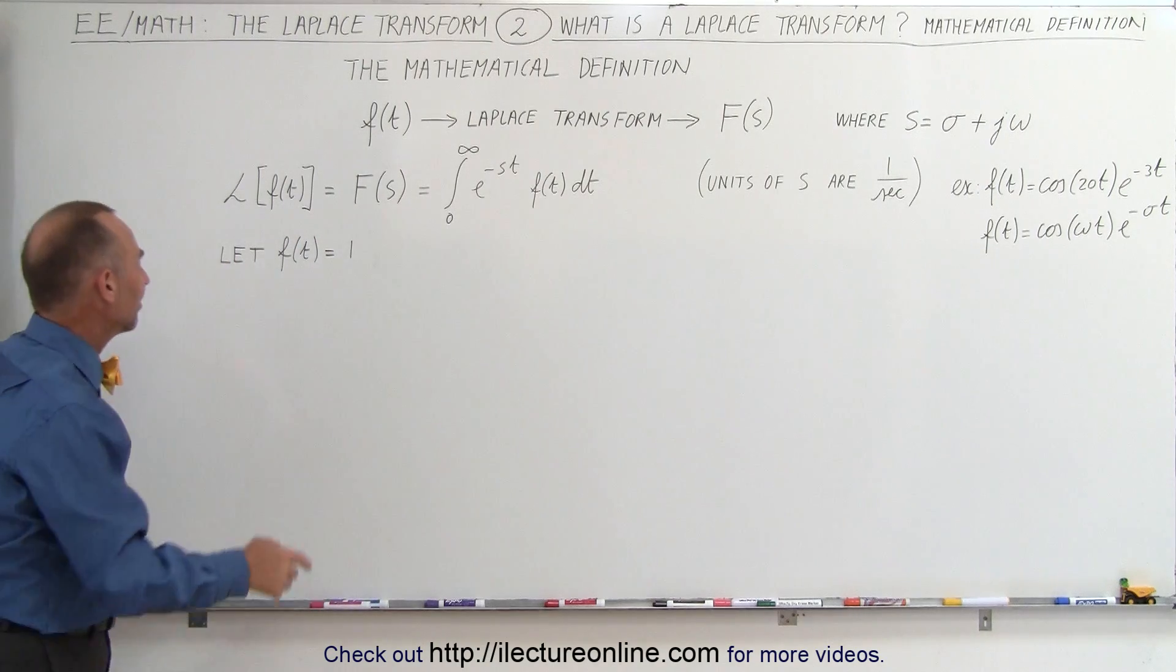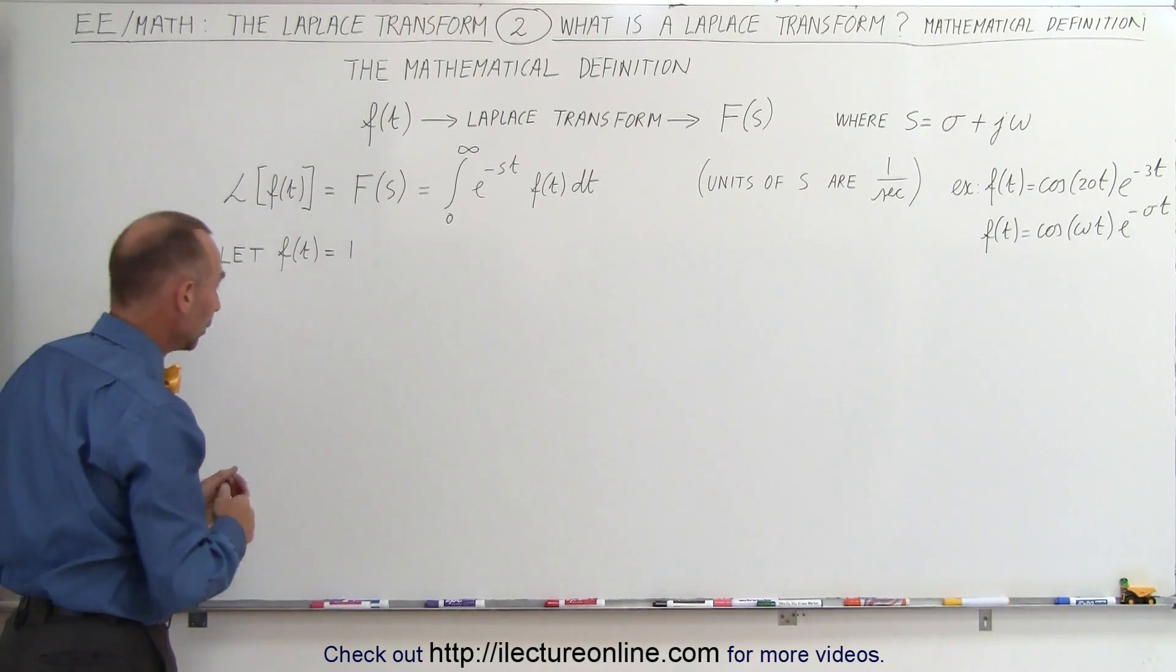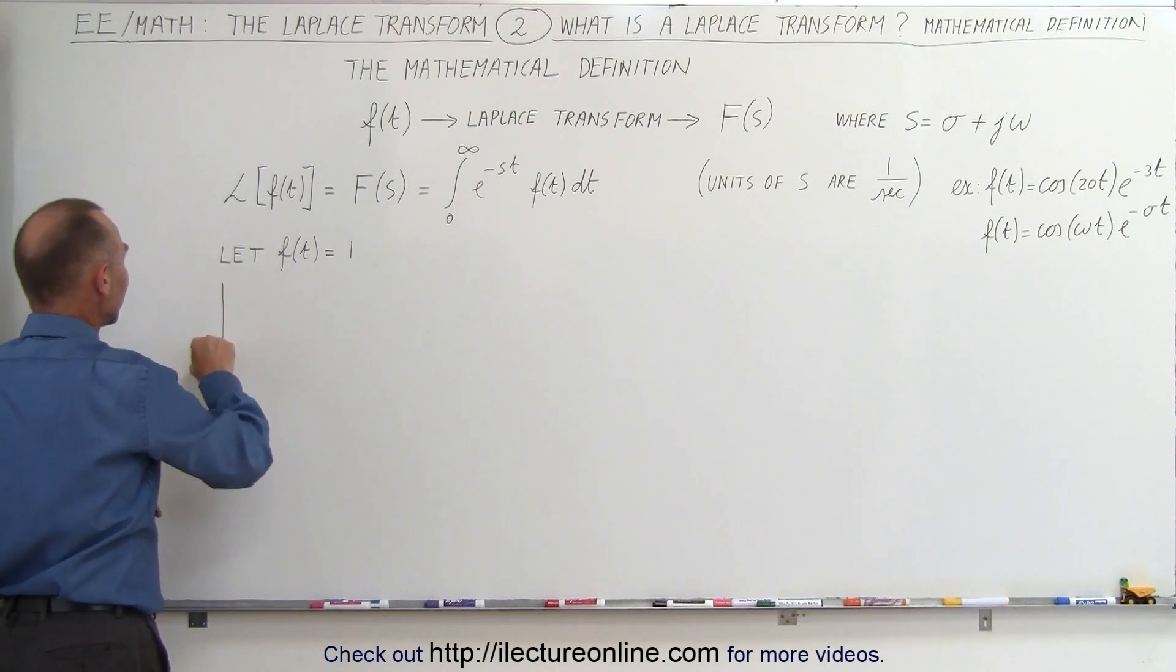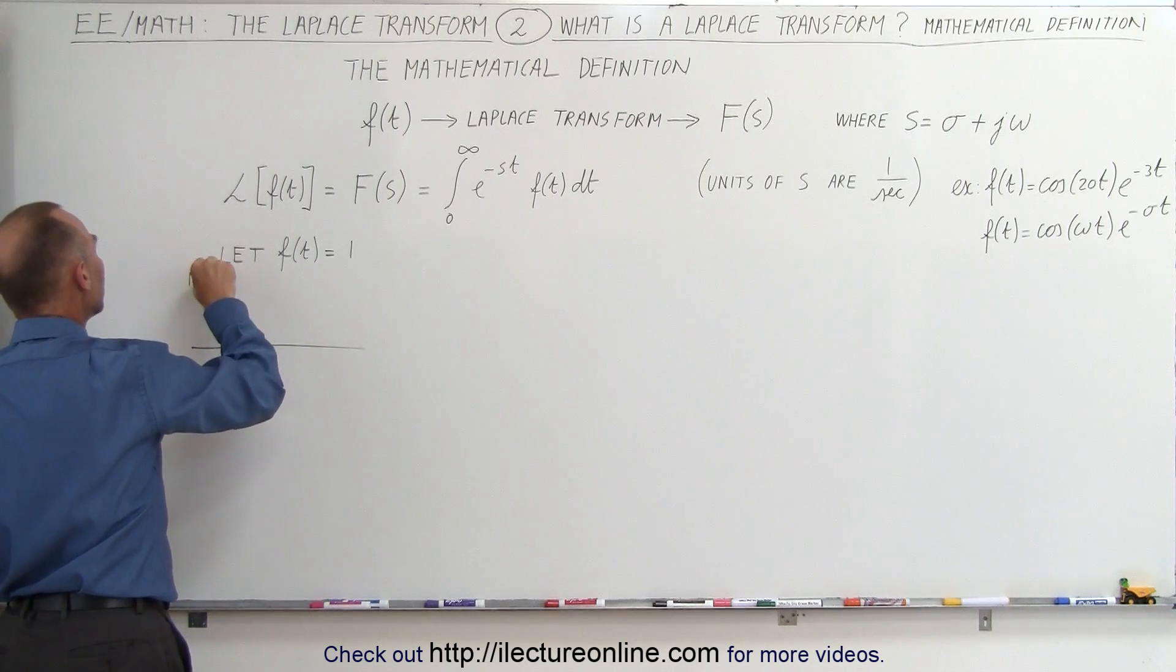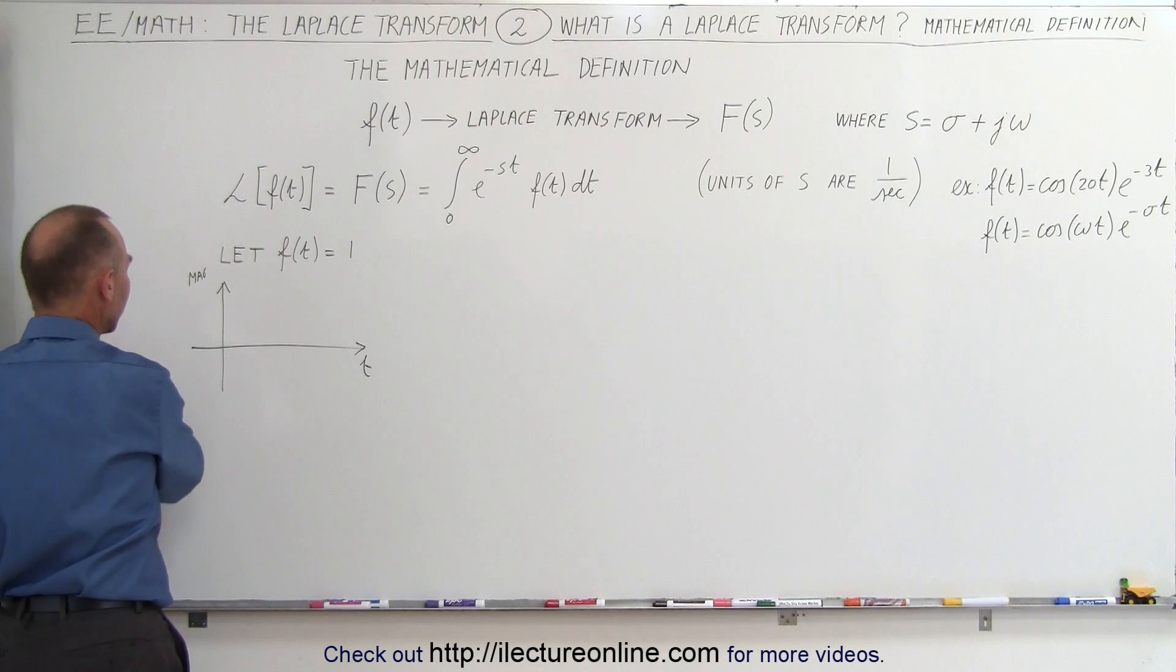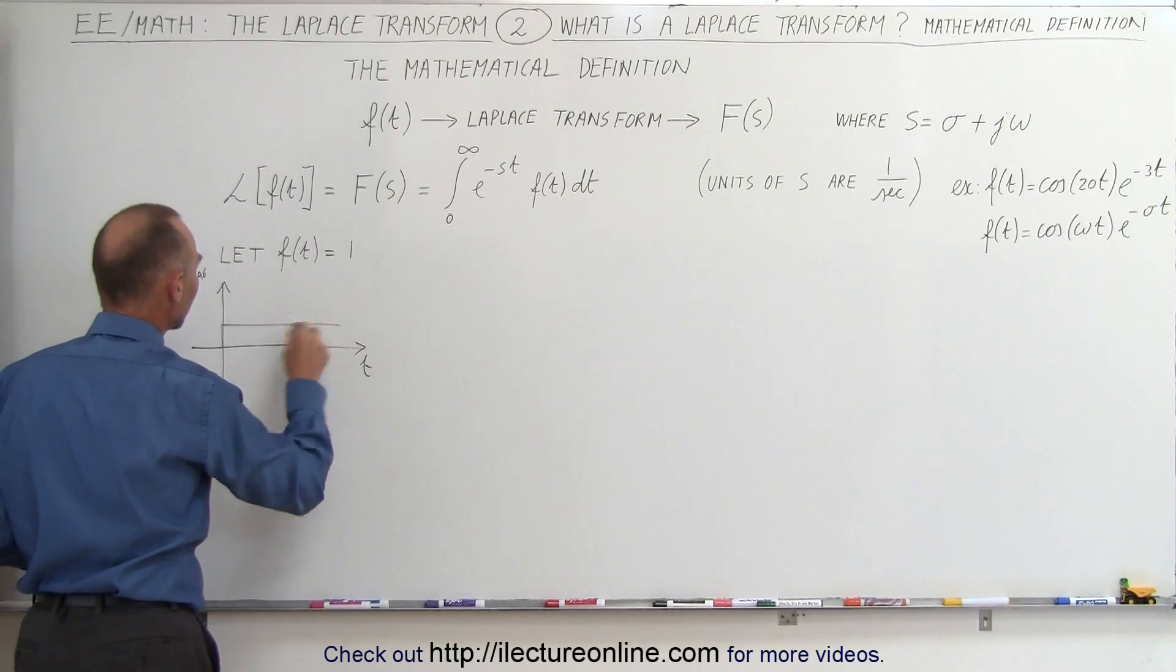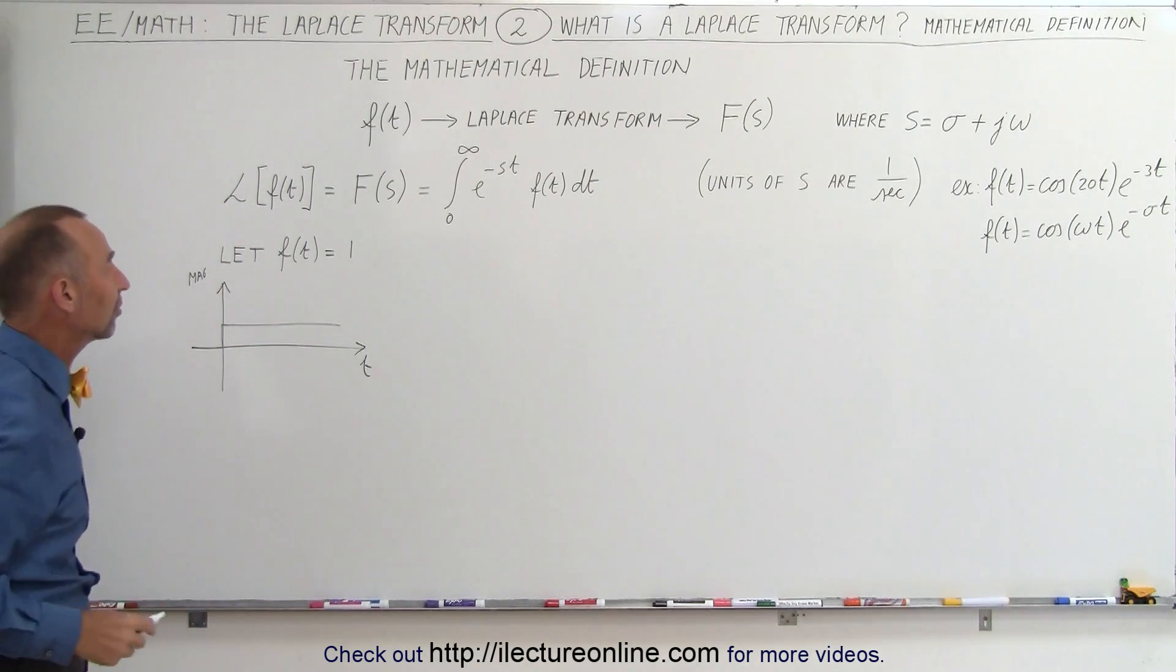Let's do a simple example. Let's say that we have a function that is equal to 1. In other words, if we want to graphically write that, starting at 0, this is the magnitude or the amplitude, and this is the time. So nothing happens until we get to time equals 0, then the function becomes 1. So it's simply a step function. What is the Laplace transform of the step function?